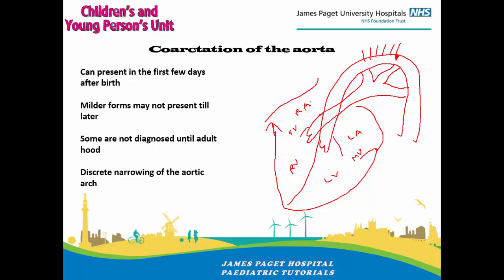Deoxygenated blood comes into the right atrium, across the tricuspid valve into the right ventricle, gets pumped across the pulmonary artery into the left and right pulmonary arteries. In fetal life you also have the structure called the ductus arteriosus. Blood gets oxygenated and comes back into the left atrium through the four pulmonary veins, then crosses the mitral valve into the left ventricle, pumps across the ascending aorta into the right common carotid, right subclavian, left common carotid, and left subclavian.